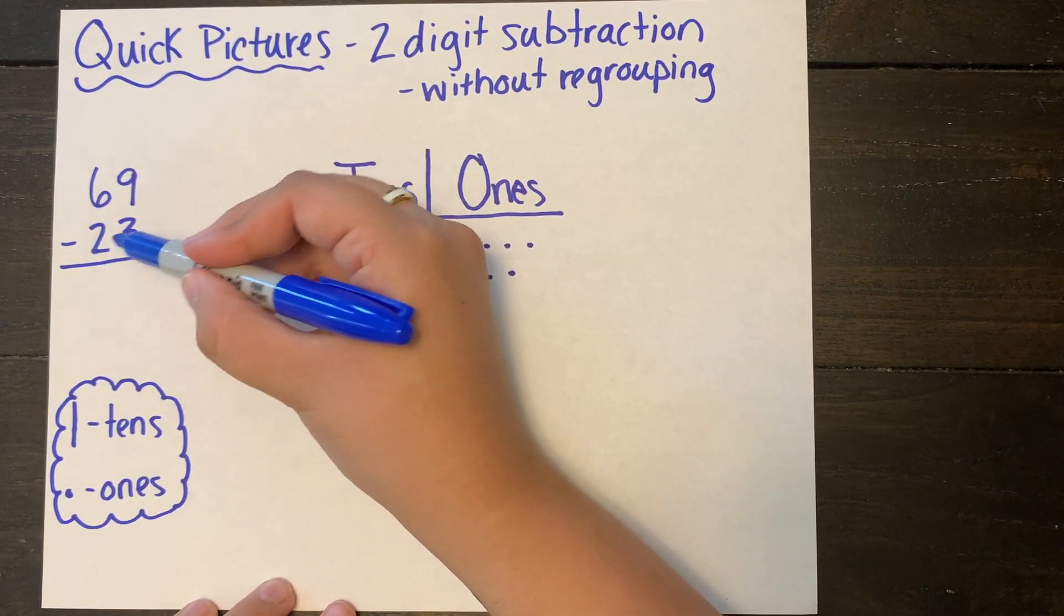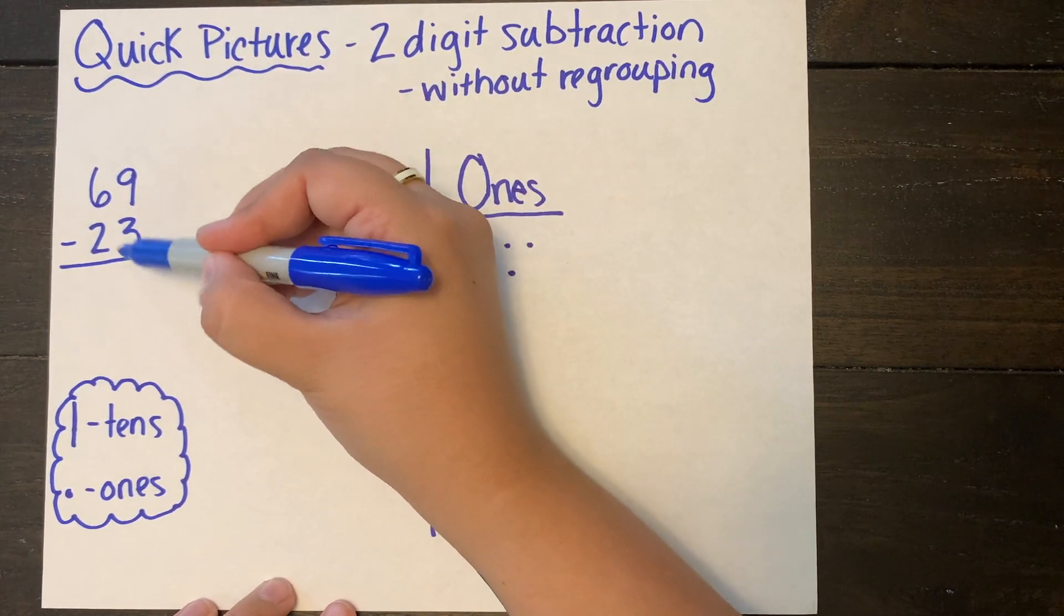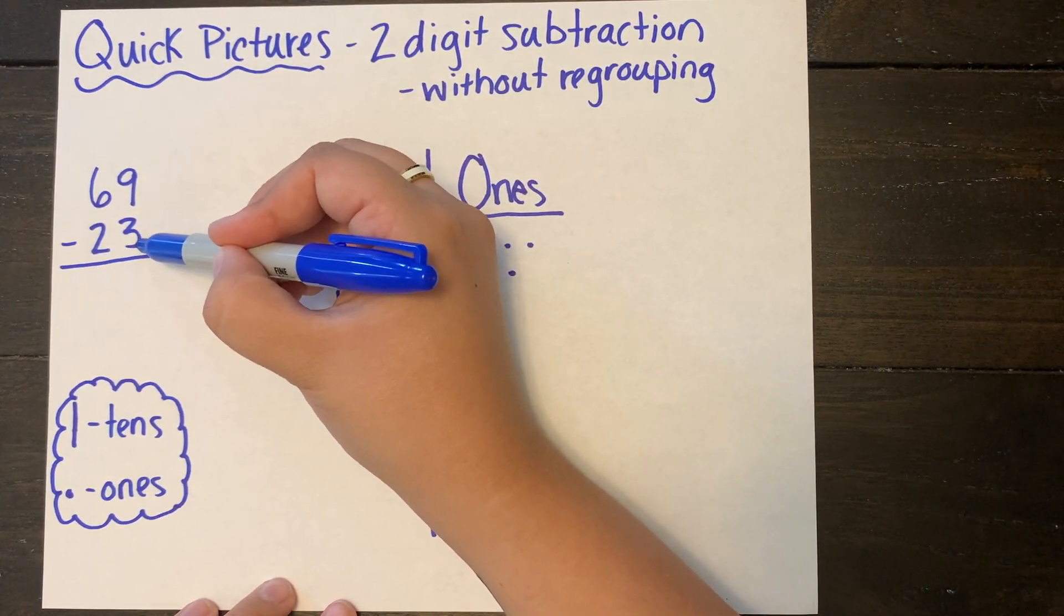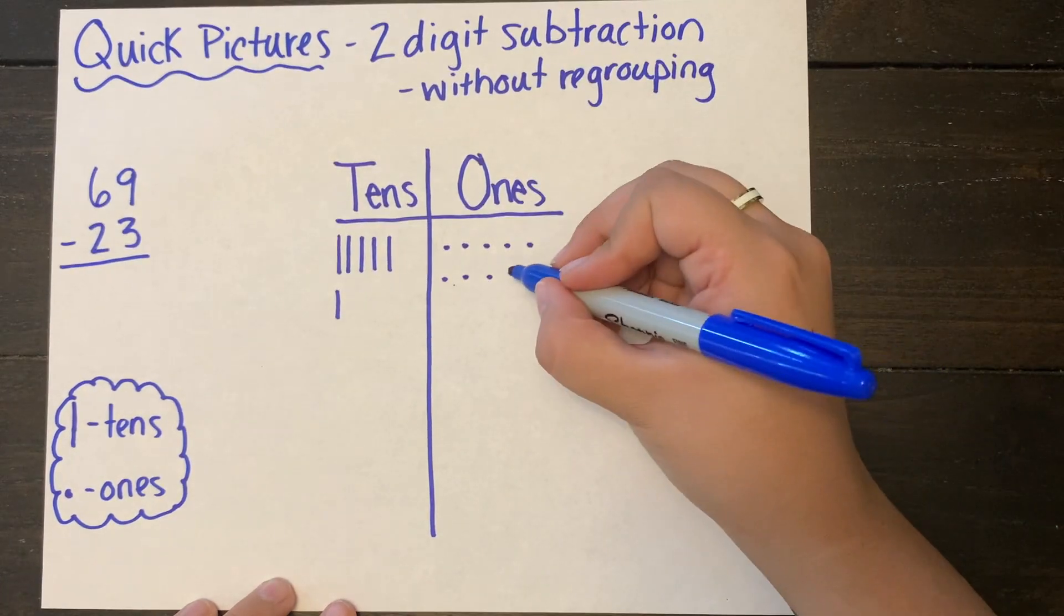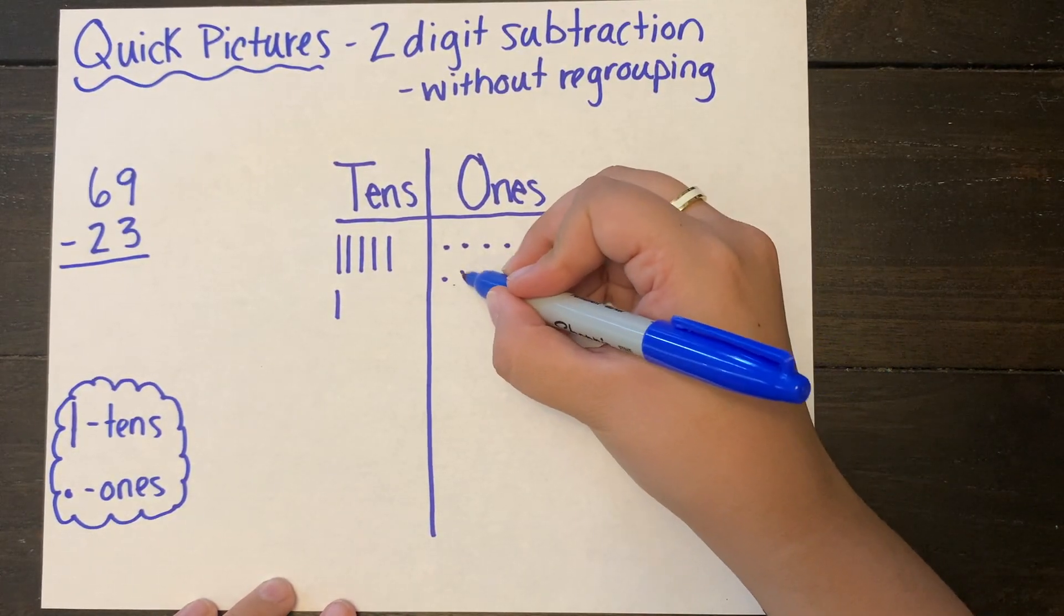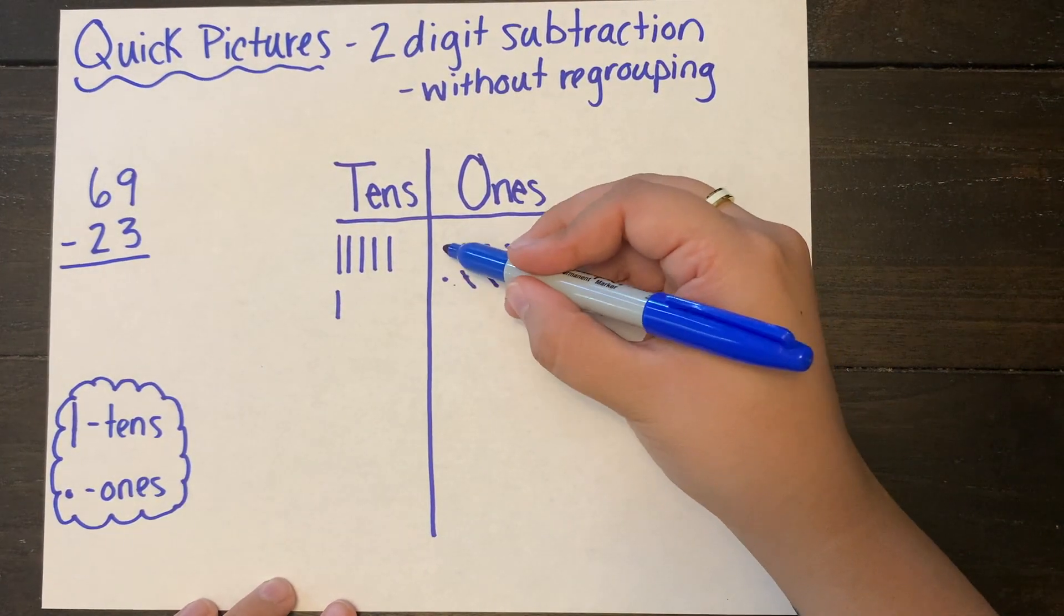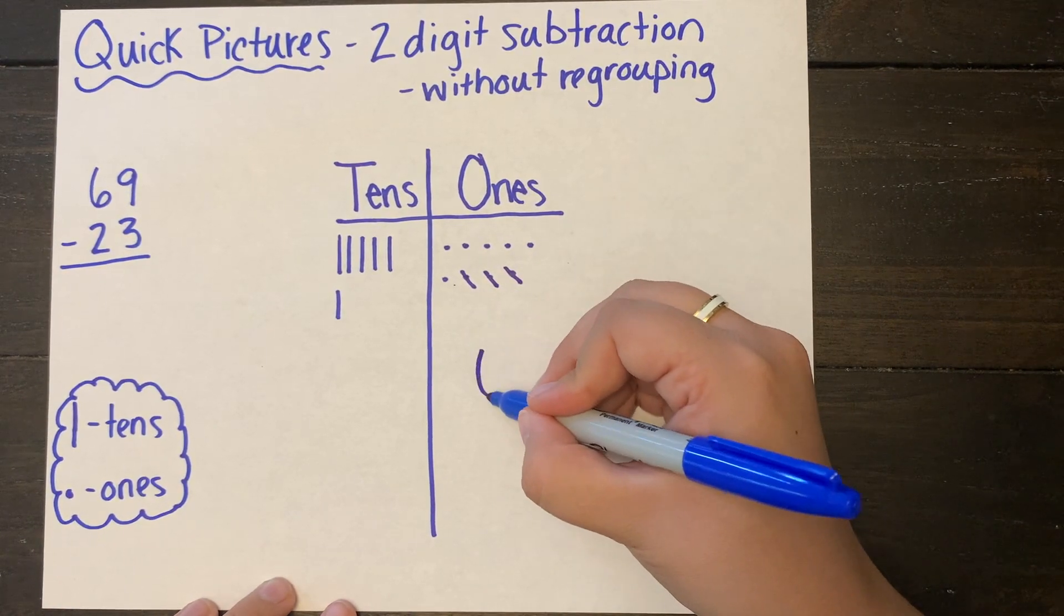So I see that I have to take three ones away and when I look at my ones column, I have enough to take three ones away so I'm just going to cross off three ones and I'm going to count up what is left over which is six ones.